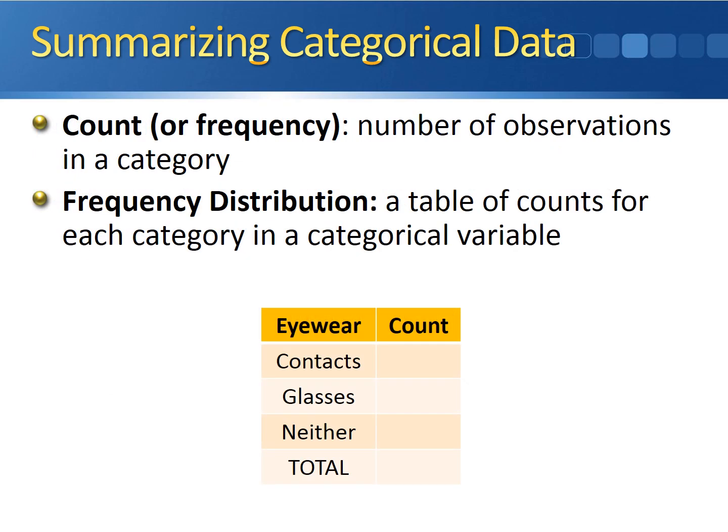To summarize data numerically, one way is using the count or the frequency, which is simply the number of observations in a category. We summarize this succinctly using a frequency distribution, which is a table of the counts for each category. We have a column for eyewear and a column for the count: 48 people wear contacts, 30 wear glasses, and 42 wear neither, adding up to 120.